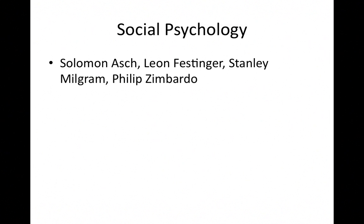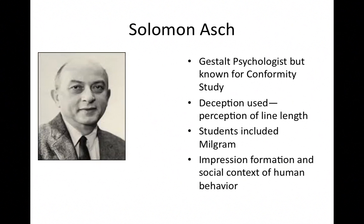In the field of social psychology, you first have Solomon Asch, a gestalt psychologist but more known for his conformity study. He used deception, telling people that the lines they were looking at were about perception, but it was really about conformity — would they conform to the other confederates and their wrong answers? Students of his included Milgram. Asch also studied impression formation and the social context of human behavior.